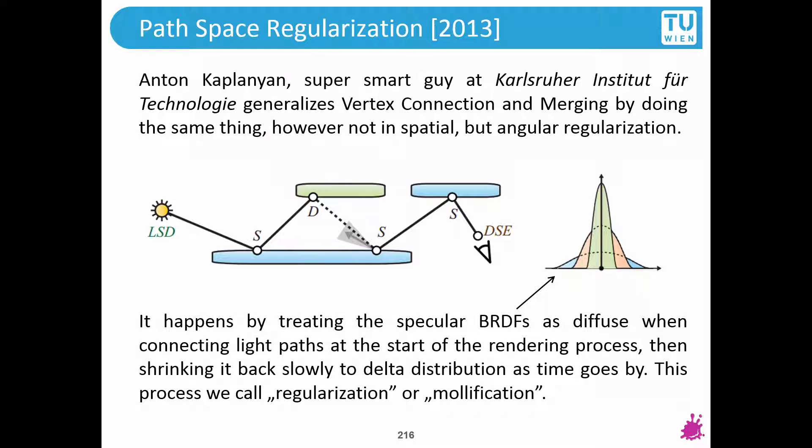The intuition is slightly different: we have delta distributions for specular reflections but we start out with a large angular tolerance. This means specular inter-reflections are treated as if they were diffuse — the mirror shows up as if it were a completely white or colored wall, and then it slowly converges to being a mirror. You can imagine this as the distribution shown on the right: a diffuse-ish BRDF in blue, and you push the two sides together over time — from blue to orange to green — squeezing until it becomes a delta distribution. Over time, mirrors become mirrors, but in the meantime we can render SDS light paths. Brilliant piece of work.